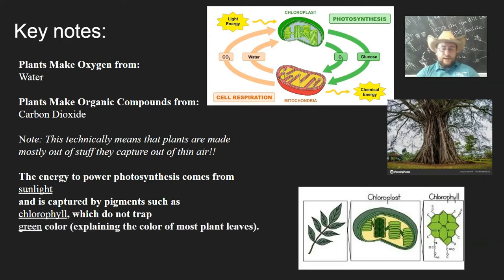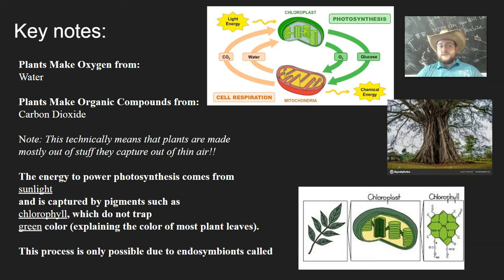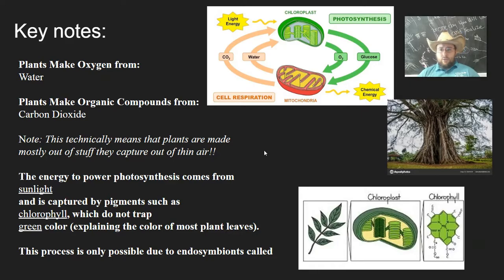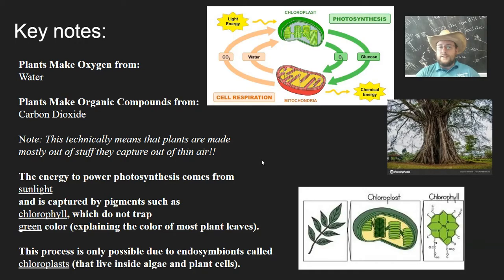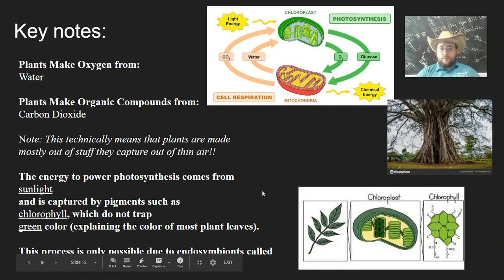That can only happen with the energy of sunlight captured by pigments such as chlorophyll, which capture most of the sunlight except the green, which explains why plants are green. This process is only possible with the help of an endosymbiont called the chloroplast, which is an ancient cousin of cyanobacteria that was enveloped by a cell long ago — an ancient ancestor of algae, which is an ancestor of plants. The chloroplast gets protection and the cell gets the ability to make its own food. Chloroplasts are living endosymbionts with their own internal compartments and even DNA.